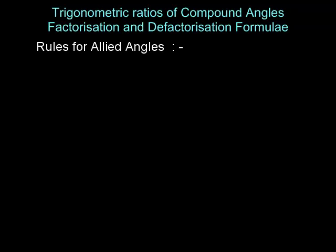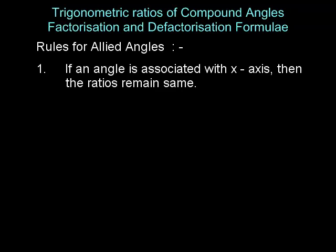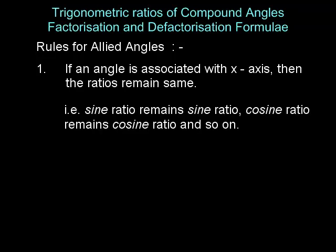Rule one: if an angle is associated with the x-axis — for example, angles minus theta, pi plus or minus theta, 2 pi plus or minus theta — these angles are associated with the x-axis. For these allied angles, the ratios do not change. For example, sine ratio remains as sine ratio, cosine ratio remains as cosine ratio.